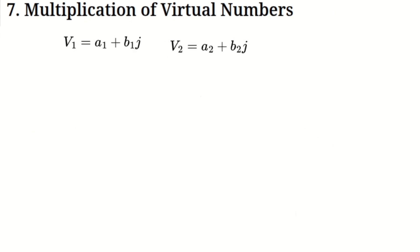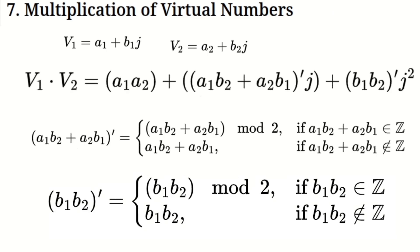Multiplication of virtual numbers. When it comes to multiplying two virtual numbers, the process is a bit more involved. First, we multiply the real parts together. Then, we handle the mixed terms, which come from multiplying the real part of one virtual number with the virtual coefficient of the other. These mixed terms are also processed using the coefficient rule. Finally, the virtual unit J raised to the power of 2 introduces another element in the system, and we follow the rules to keep everything consistent.